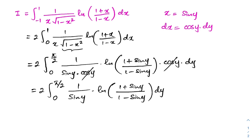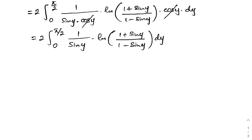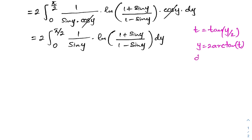What do you think about this integral? What is your next step? Now I am going to use the Weierstrass substitution. I am going to take t equals tan(y/2). We can isolate y, so y equals 2 times arctan(t). Now we differentiate: dy equals 2 dt over (1 plus t squared).